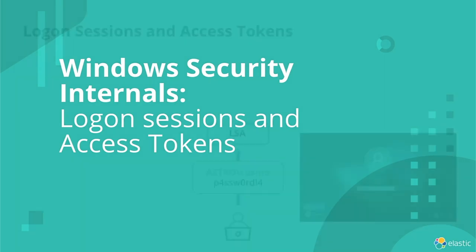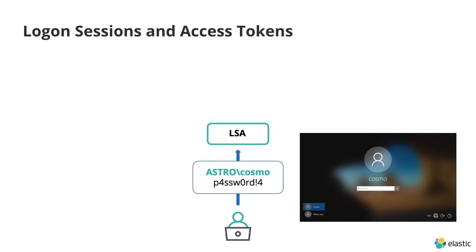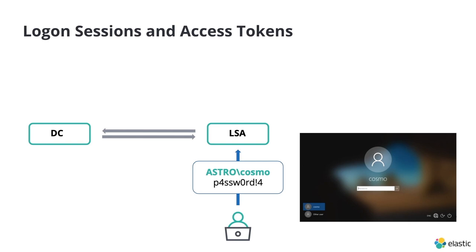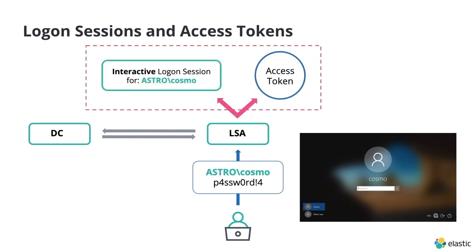The first part covers some Windows security internals. A key thing to understand is the relationship between logon sessions and access tokens. The best way to demonstrate this is to show what actually happens when you log on. In this example, we have the user Cosmo who's logging on. When they enter their password, the local security authority or LSA in a domain environment will typically forward this to the domain controller, who will then actually authenticate the user. Following successful authentication, the LSA produces two key artifacts: a logon session and an access token. A logon session indicates the presence of a user on a machine — it starts when they're successfully authenticated and ends when they log off.